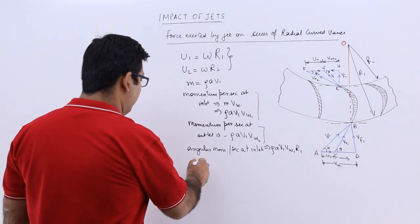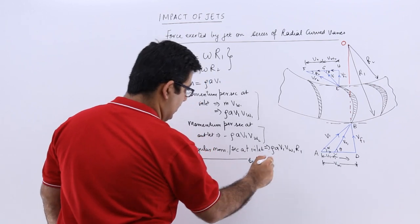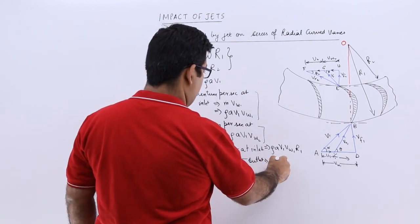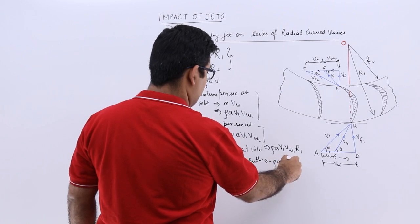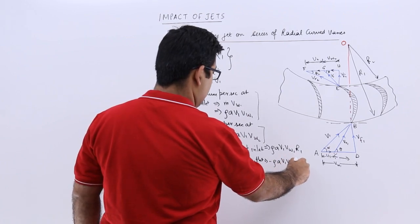Similarly, the angular momentum at outlet would be minus ρAv1vw2 into r2.